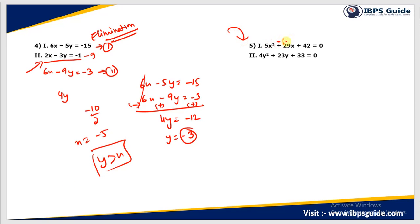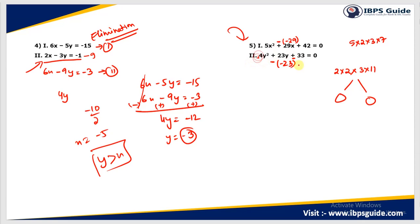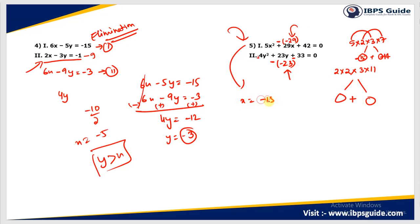For question 5, we have 5x² + 29x + 42 = 0. Making it negative: 5x² − (−29x) + 42. The product 5 × 42 = 2 × 3 × 7 factors. I need two numbers that sum to −29. Looking at the factors: 5 × 3 = 15 and 7 × 2 = 14, so 15 + 14 = 29. Therefore −15 and −14 give −29. So x = −15 and −14, divided by 5 gives x = −3 and −2.8 (approximately).